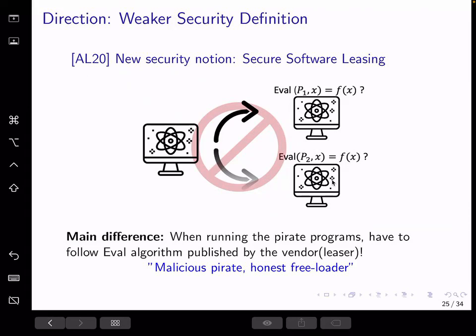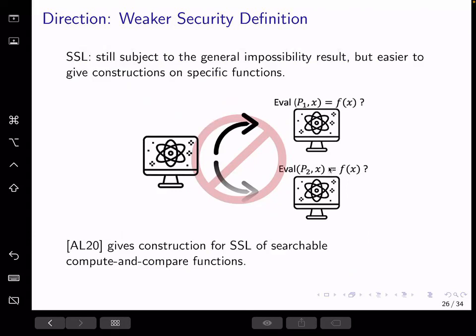Therefore, we can, for example, add some validity checks in the evaluation algorithm so that only certain quantum states will pass this check and continue to output the evaluation of the function. Otherwise, you don't get to output anything.